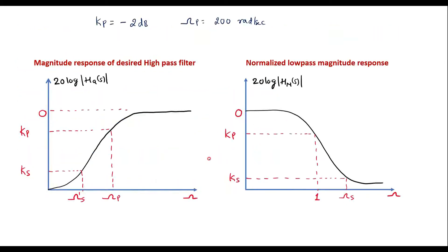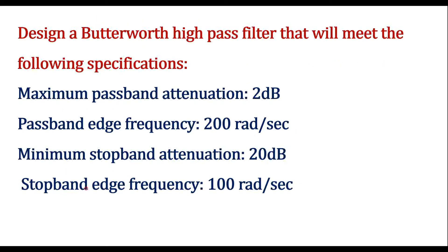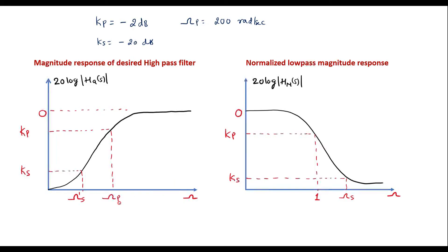Minimum stopband attenuation is 20 dB, which means Ks equals minus 20 dB. The stopband edge frequency is 100 radians per second, so omega_s (dash) is 100 radians per second, and omega_p is 200 radians per second.